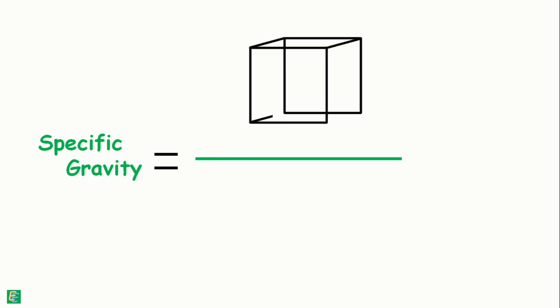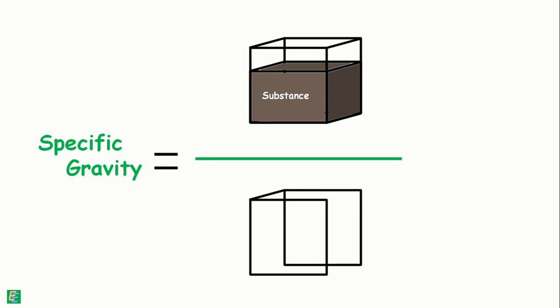Specific gravity of any substance is the ratio of the density of that substance to the density of a reference substance.